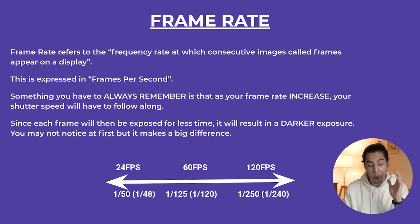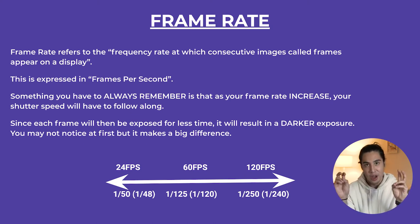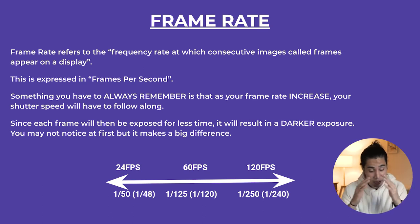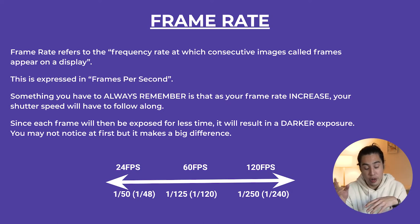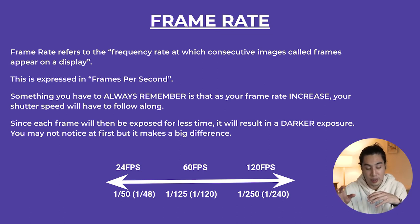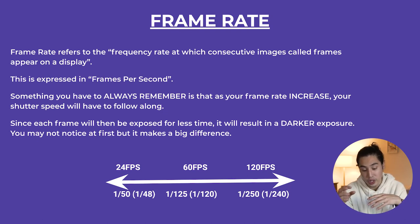Frame rate — you might be wondering why we're talking about frame rate when the triangle only has three sides. Frame rate is kind of like the unofficial fourth side of the triangle. A frame rate refers to the frequency rate at which consecutive images — called frames — appear on a display, expressed in frames per second. You always have to remember that as your frame rate increases, your shutter speed will have to follow along. When you change your frame rate, you have to change your shutter speed, since each frame will be exposed for less time, resulting in a darker exposure.